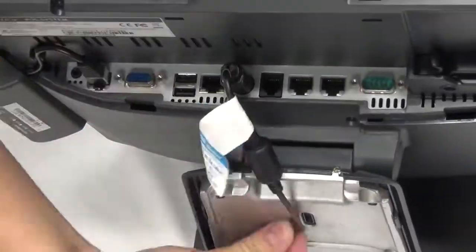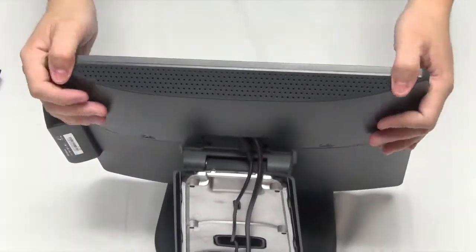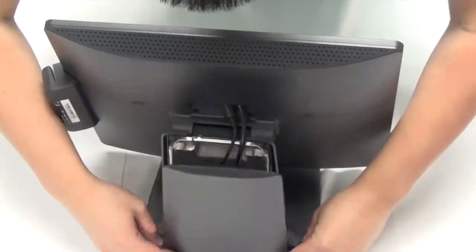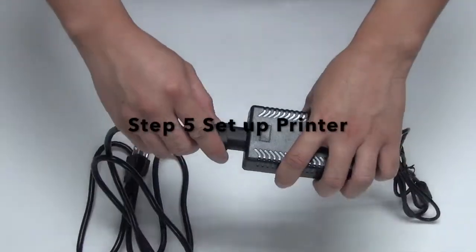Plug in the power cable and network cable. Connect network cable to the switch. Then put the covers back to finish the station setup. Step 5. Set up printer.